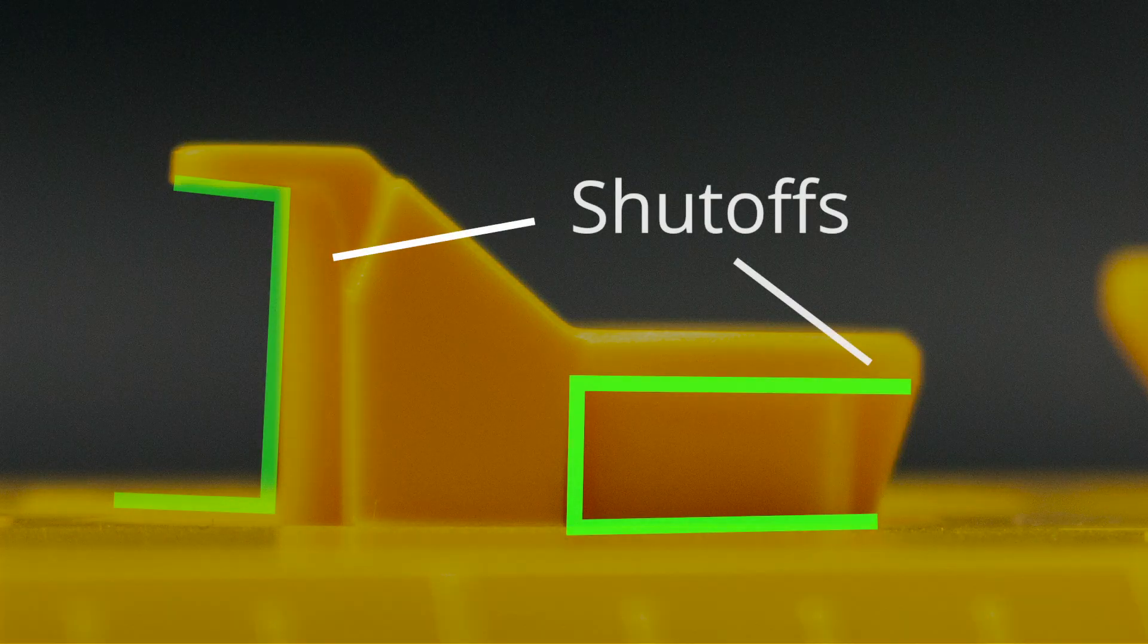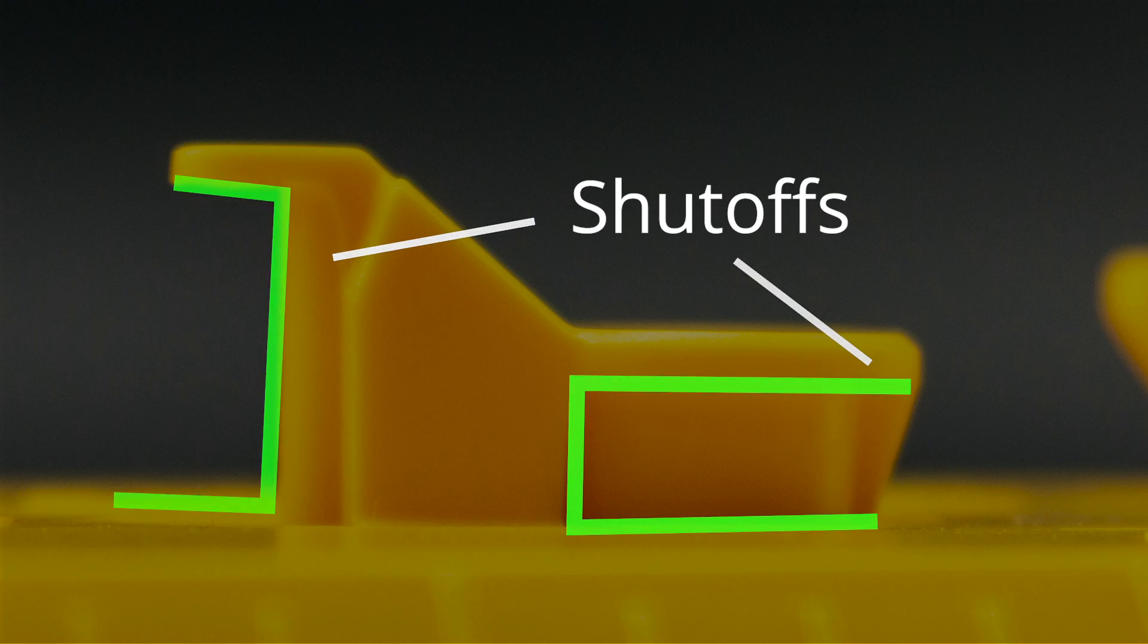The parting lines on core features are also known as shut-offs, describing where the core and cavity must be flush to prevent any excess material or flash along those seams.